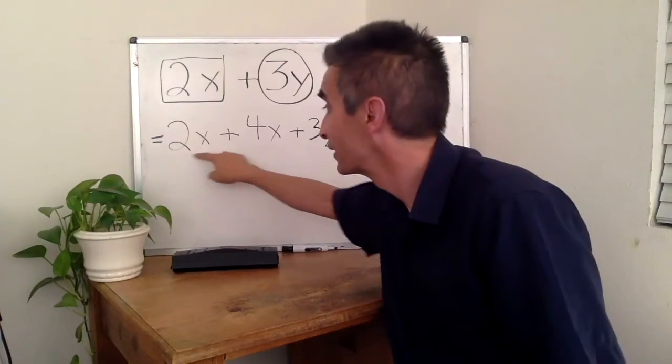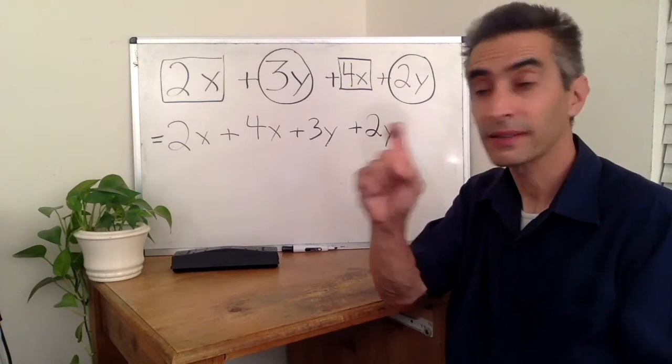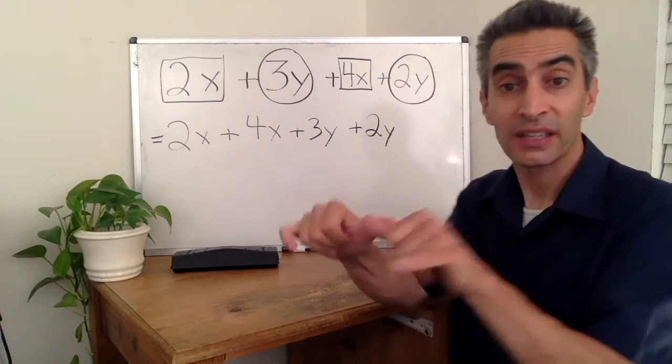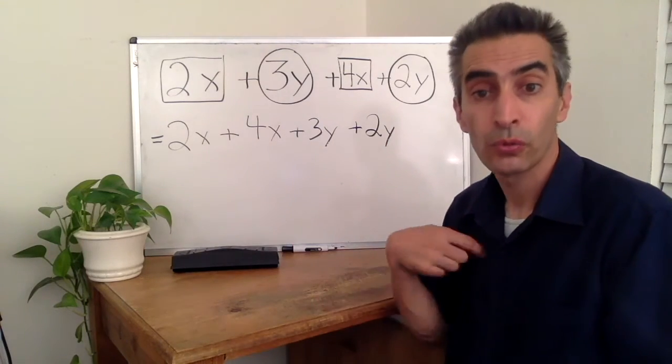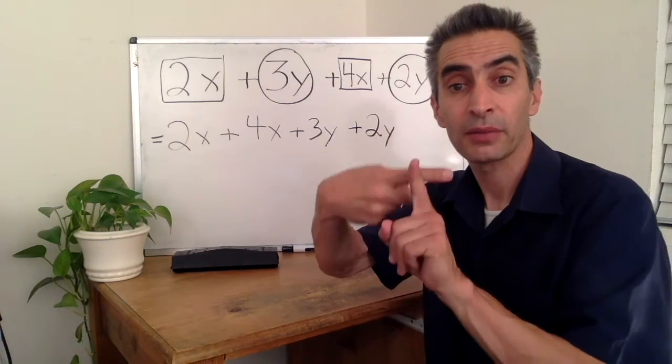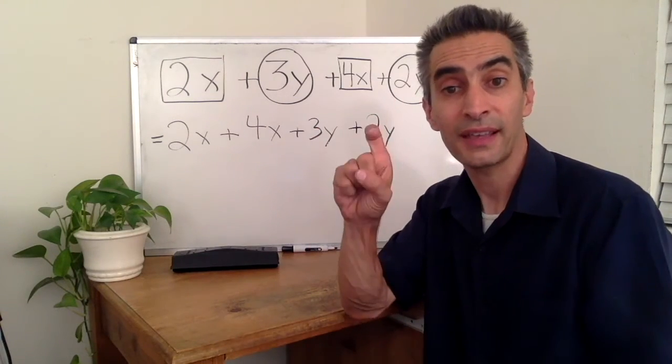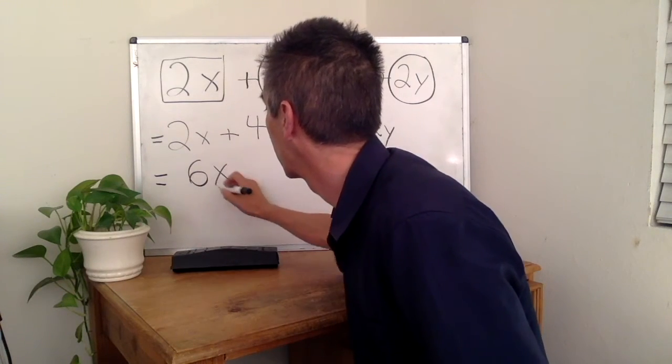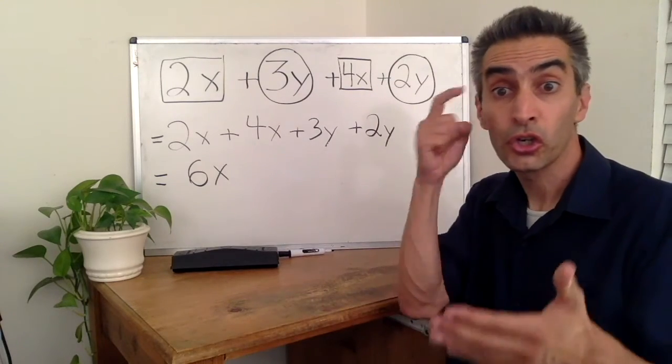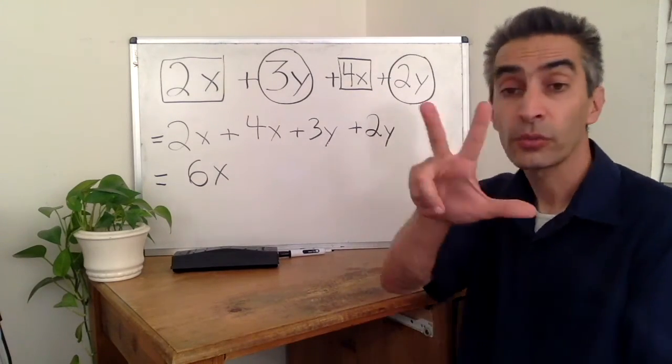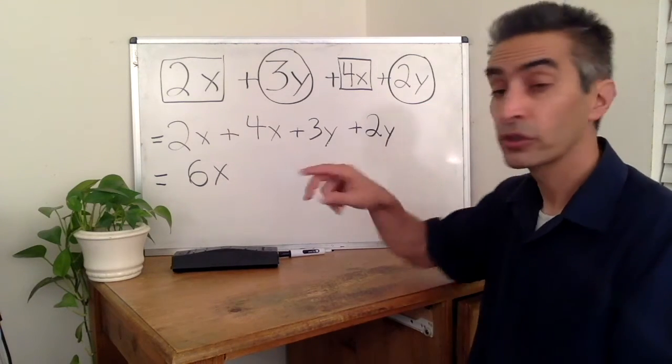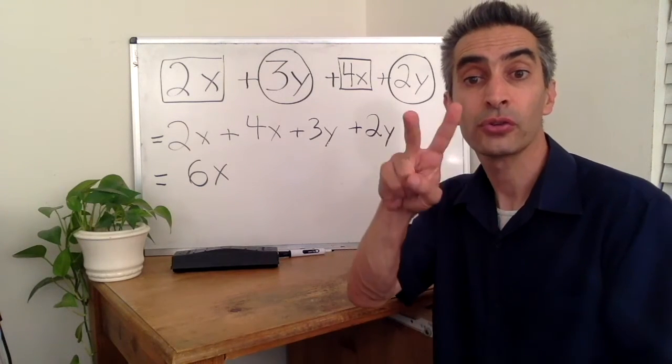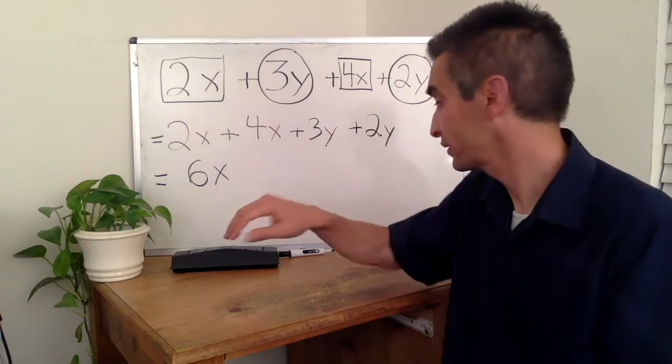Notice again. The 2 is with the x. The 4 is with the x. That means they're common terms. We must add up the 2x plus 4x equals 6x. Next, notice again. The 3 is with the y. The 2 is with the y. We must add up the 3y with the 2y to equal 5y.